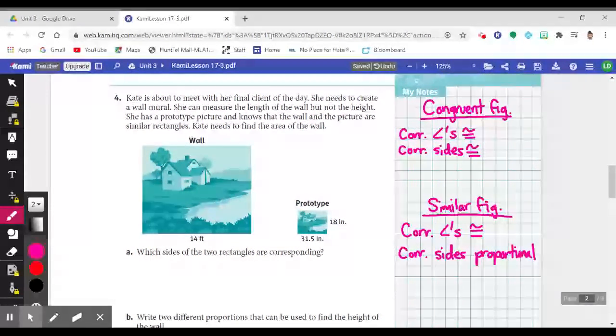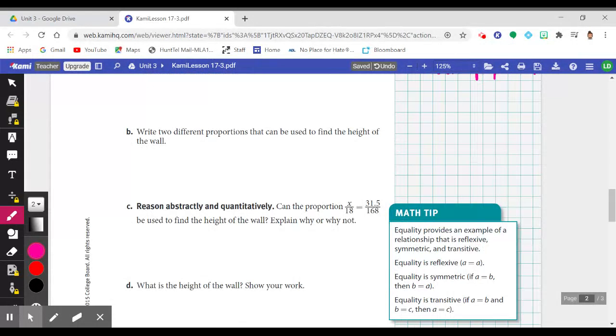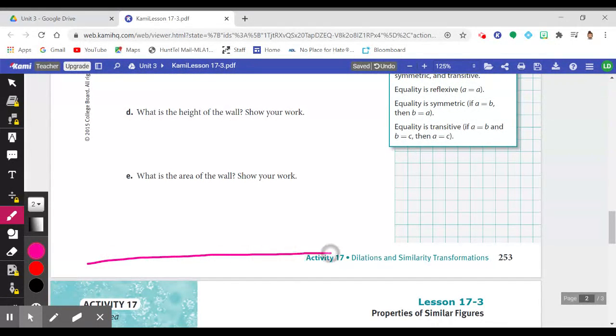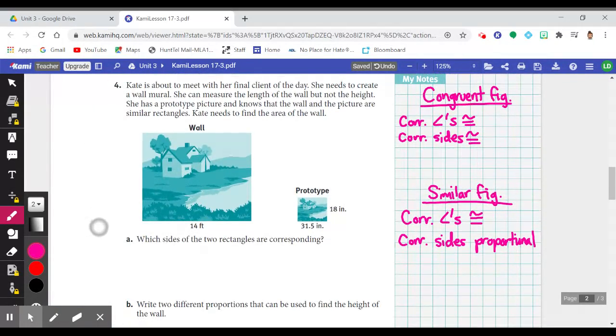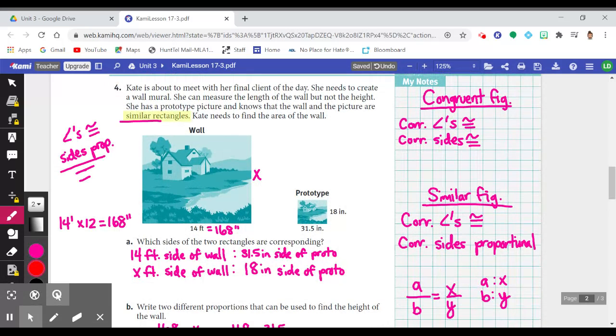So now we're on item four. If you would, go ahead and draw a line at the very bottom of your page. We're going to work through all the way through part E. So pause the video, complete item four before playing through. So Kate met with her final client, Kate, the graphic designer, and she's creating a wall mural. They tell us that she has a prototype picture, something small that she can actually hold. And she wants to compare that to the mural that she's going to create on the wall.